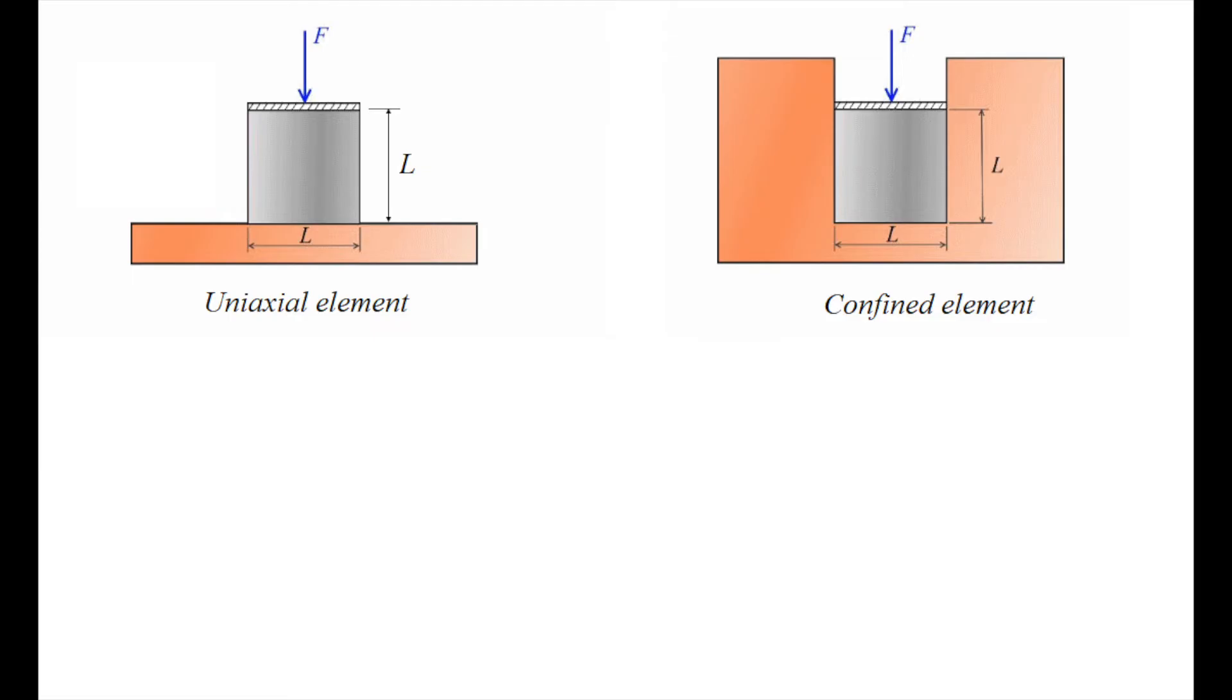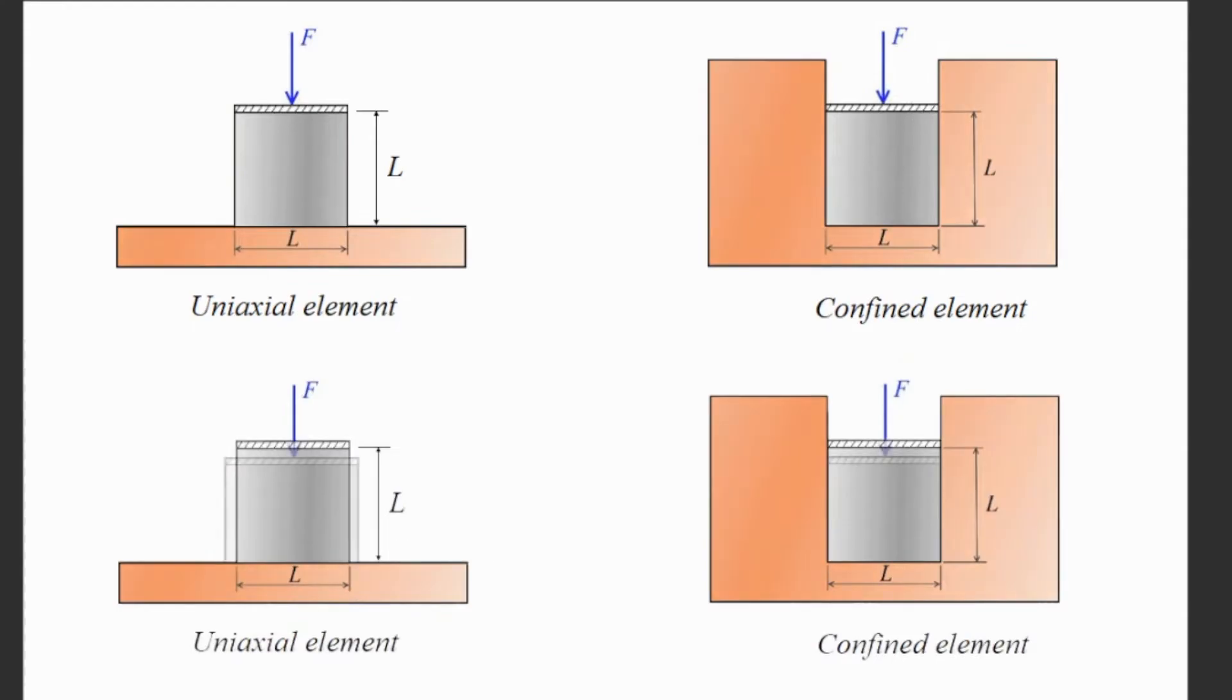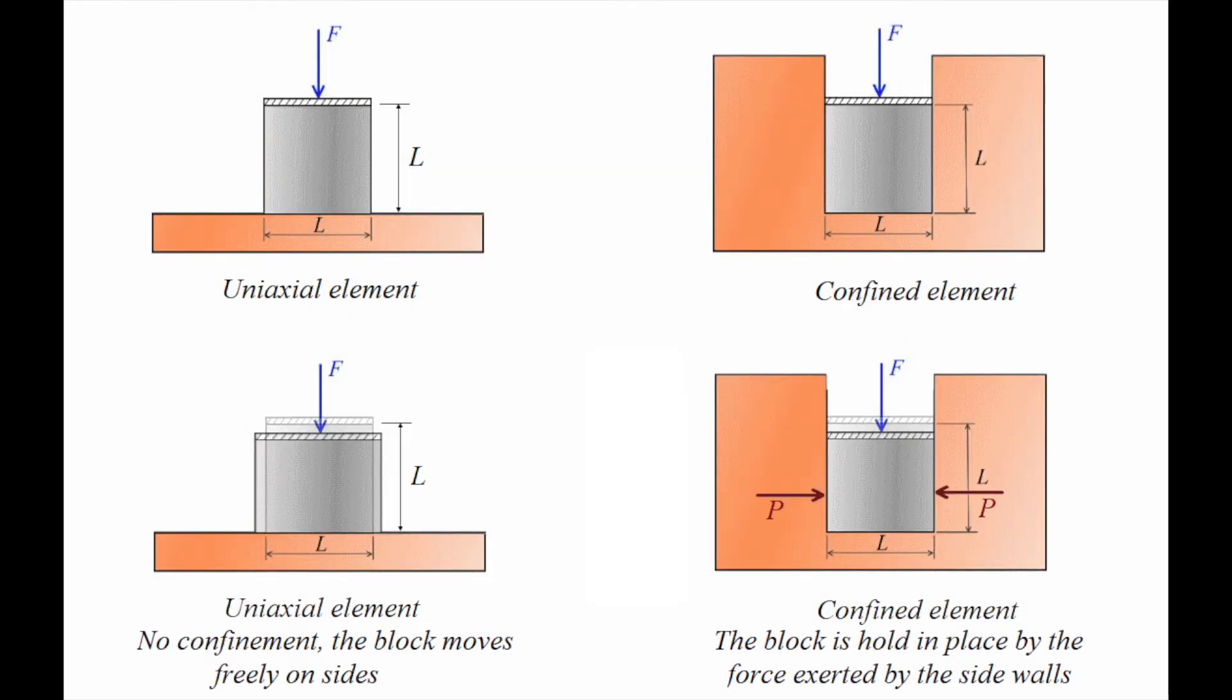Okay, so let me draw something here. There is a block and this block is going to be compressed. When we compress the element downward, it is going to shrink in the vertical direction and it's going to expand on the sides. But if there is a container, it would not allow this block to expand on the sides. So there should be some forces that are developed here in order to push that back to the original position. Does that make sense?